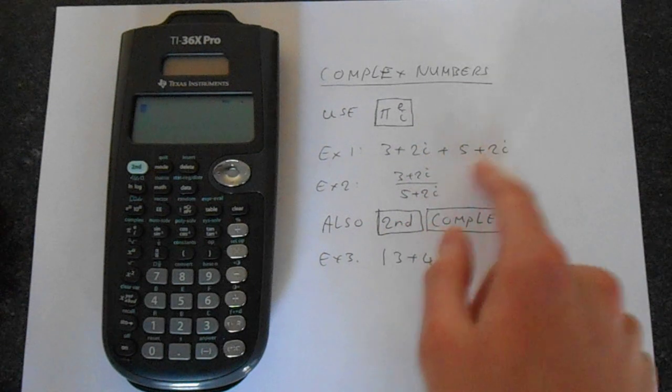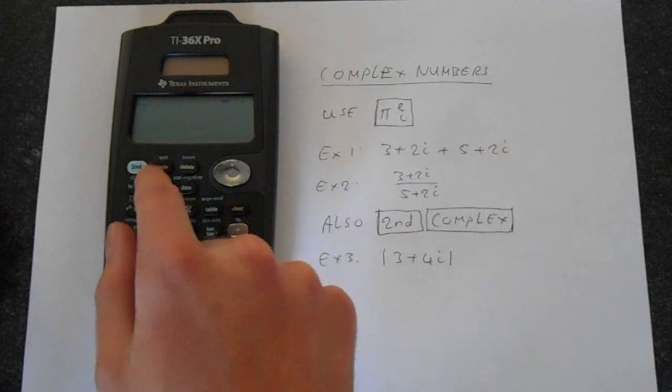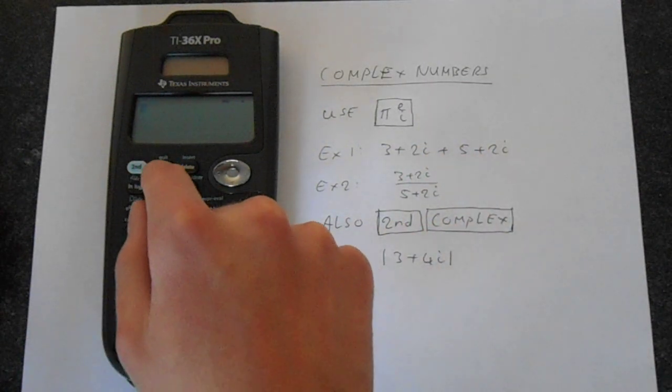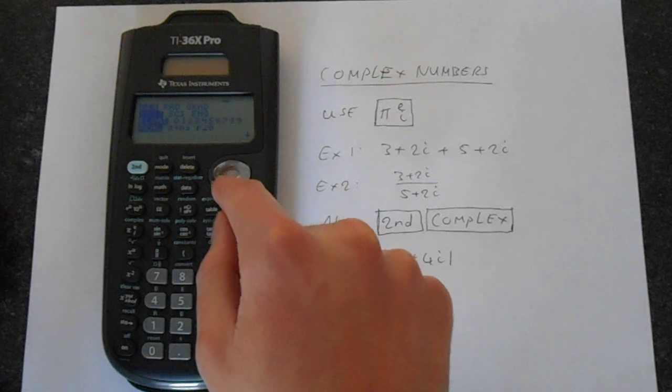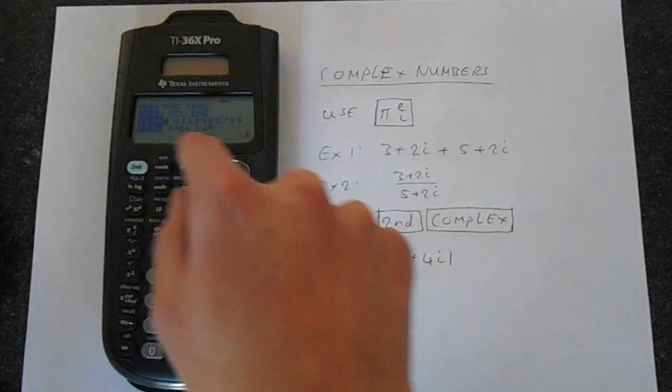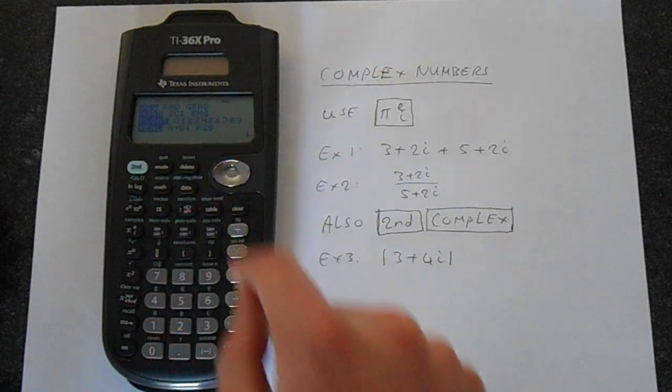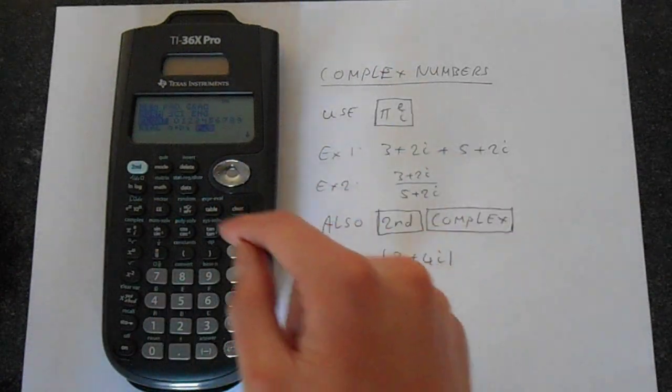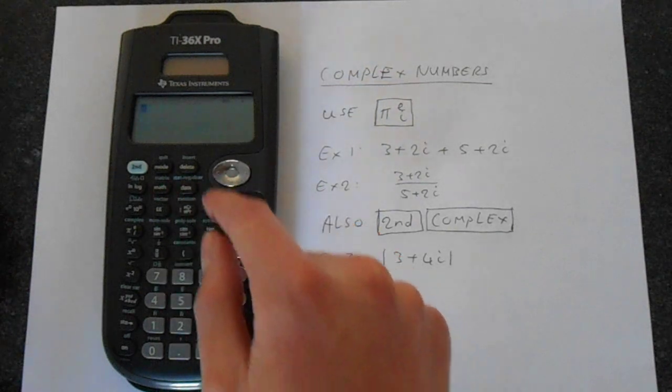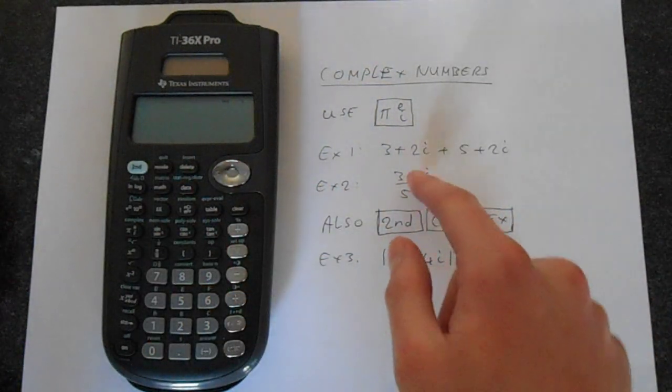You can change how it displays the results. So if you go to mode, and then go down, and then if you go across under real, you've got this r and theta. So we'll just turn that on. And if you press clear to exit that, we've changed the format.